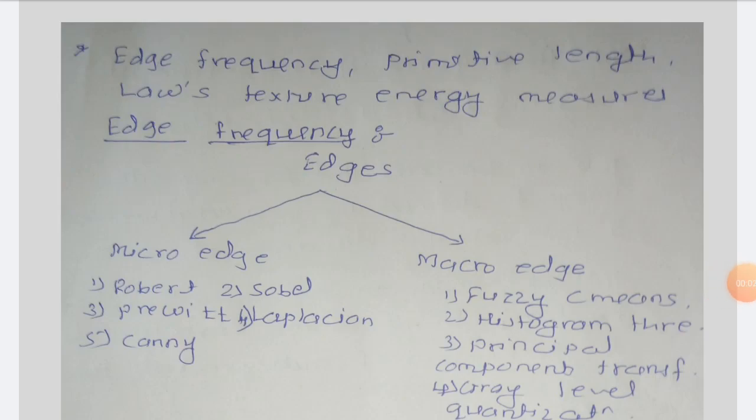In the previous lecture we started with texture, where we saw statistical texture description methods based on spatial frequency. We covered first order features, co-occurrence matrices, how to calculate them, and how to find second order features such as uniformity, entropy, maximum probability, and difference moment of order k. In this lecture we will see three topics: edge frequency, primitive length, and Laws texture energy measures.